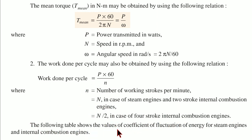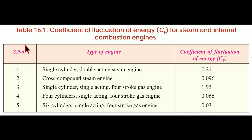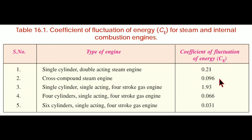The following table shows the values of coefficient of fluctuation of energy for steam engines and internal combustion engines — Table 16.1. For a single cylinder double-acting steam engine, CE is 0.21. For a cross compound steam engine, CE is 0.096. For a single cylinder, single acting, four-stroke gas engine, CE is 1.93.